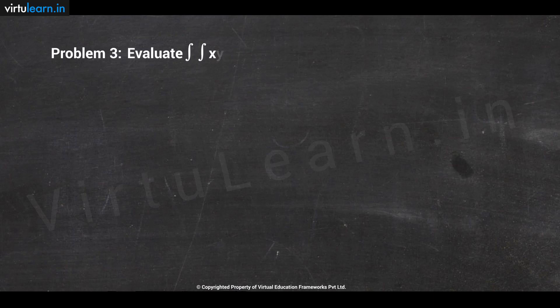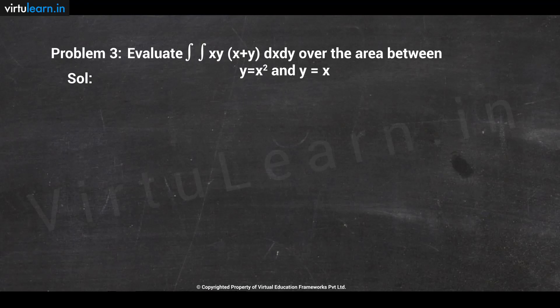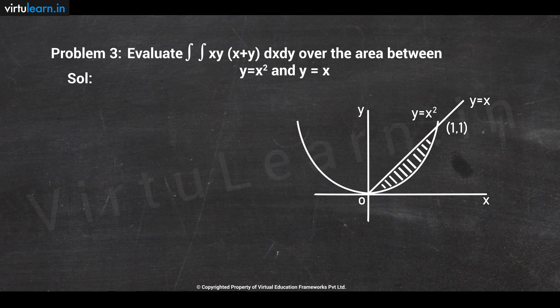Let us now discuss another problem: evaluate ∬ xy(x + y) dx dy over the area between y = x² and y = x. This problem differs from earlier ones in that limits are not given explicitly. The curve y = x² is a parabola symmetric about the y-axis passing through the origin, and y = x is a line making 45° with the x-axis. The parabola and line intersect in the first quadrant at (0,0) and (1,1).